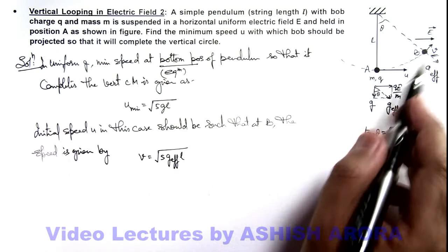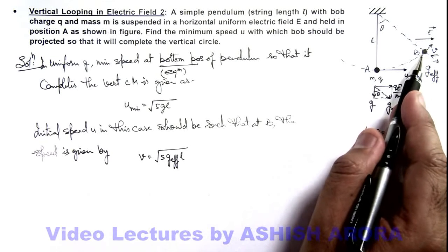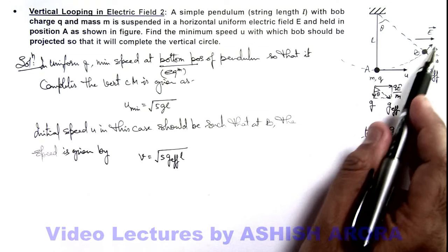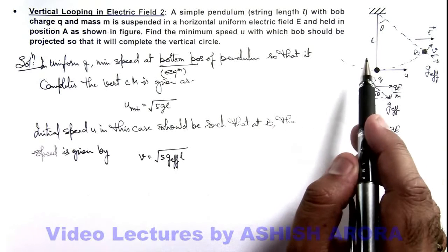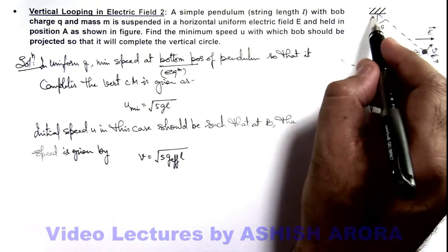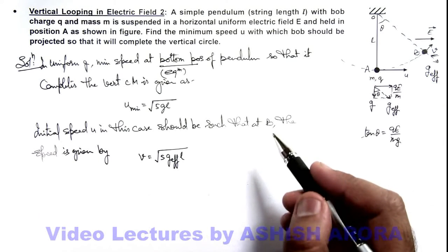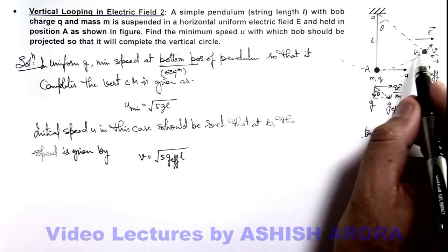Because if at this point which is the equilibrium position of this case, if the speed becomes root 5 g effective l it'll complete the vertical circular motion about the suspension point O.